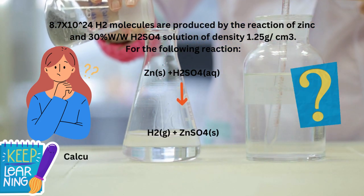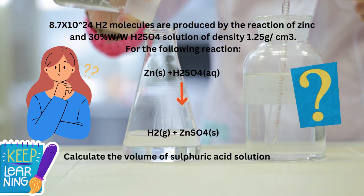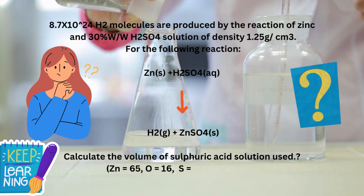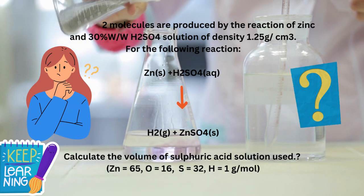Reaction: Zn + H2SO4 react and gives H2 + ZnSO4. Calculate the volume of sulfuric acid solution used.